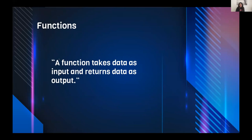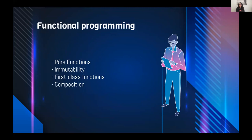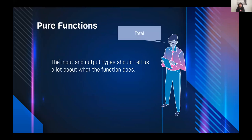In functional programming, it's very important to have pure functions. Pure functions should satisfy different criteria. One is totality: we should be able to know what to expect from the input and output types. For example, 'makeInt' is a function that takes a String and we'd expect an Integer as output — but this is not always true; it's a lie.